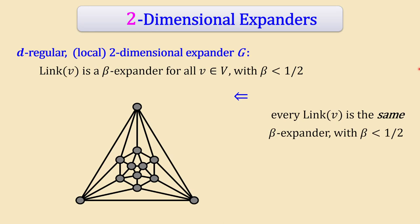An even stronger — though sufficient — condition is if every vertex has the same link graph L, and that graph L is itself a beta-expander with beta smaller than 1/2. This would imply the two-dimensional expander condition. It's a natural idea for constructing two-dimensional expander graphs.